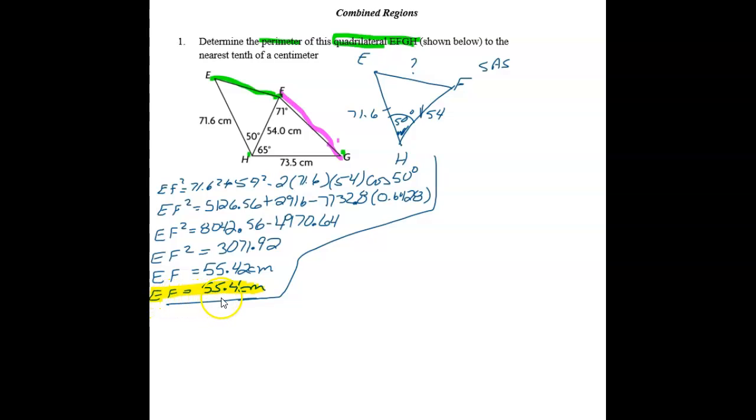So we worked out our answer here to 55.4 centimeters. Our measurements were given to one decimal place, so that's why we rounded it to one decimal place for our answer. Now to concentrate on our second triangle, FGH. So I'm going to draw that one separately.